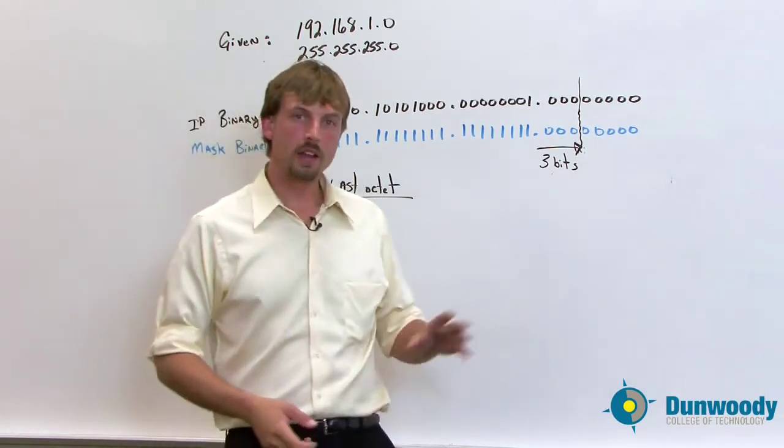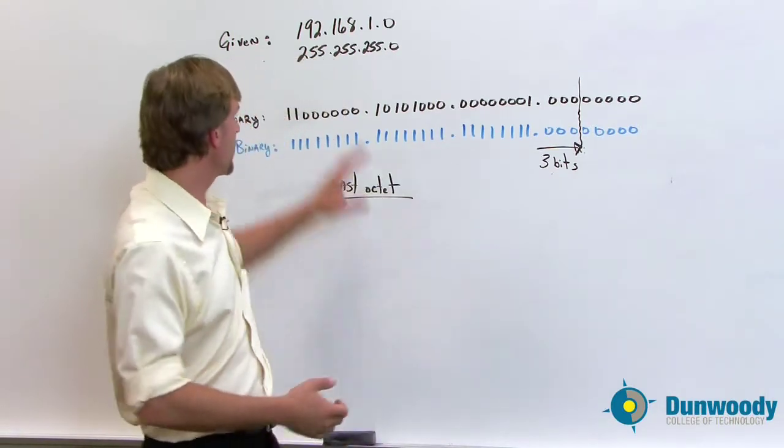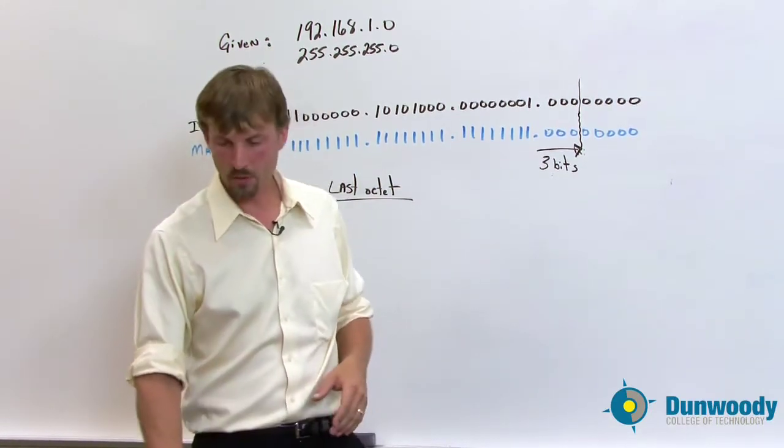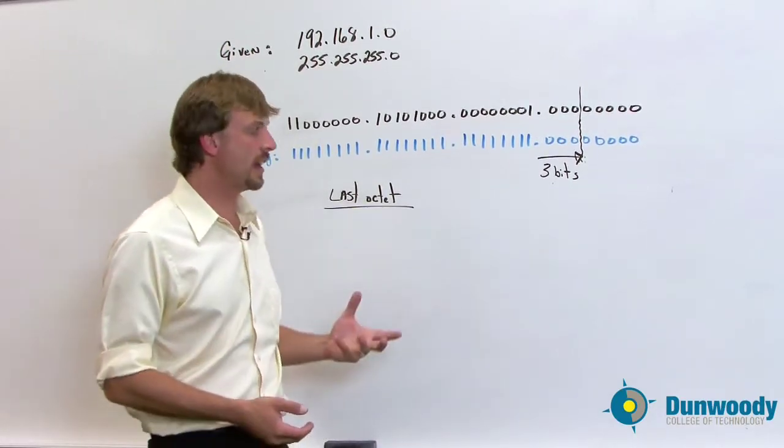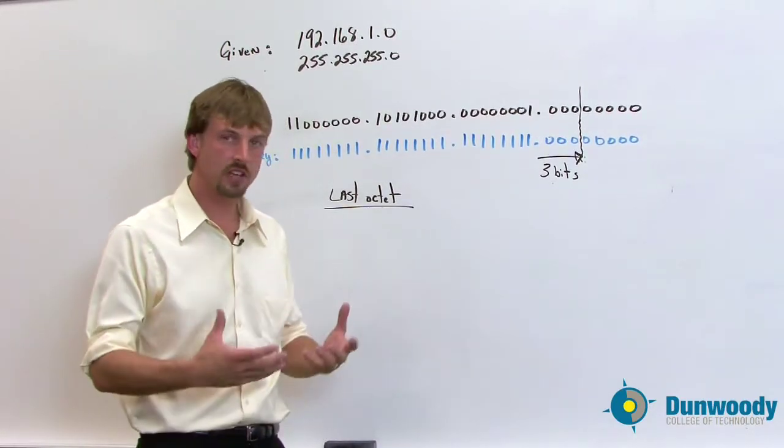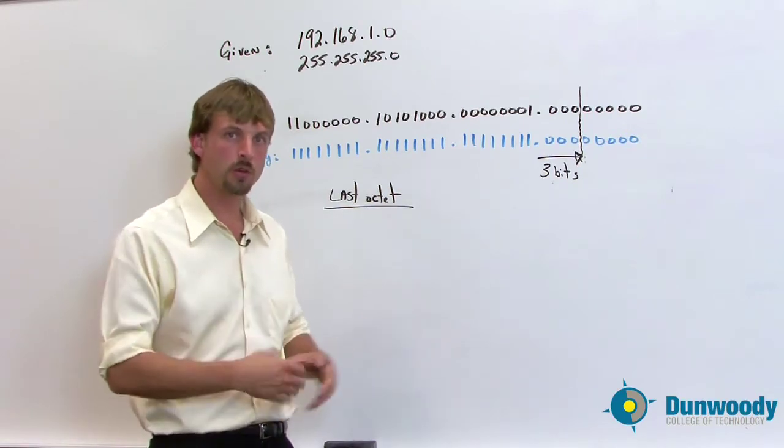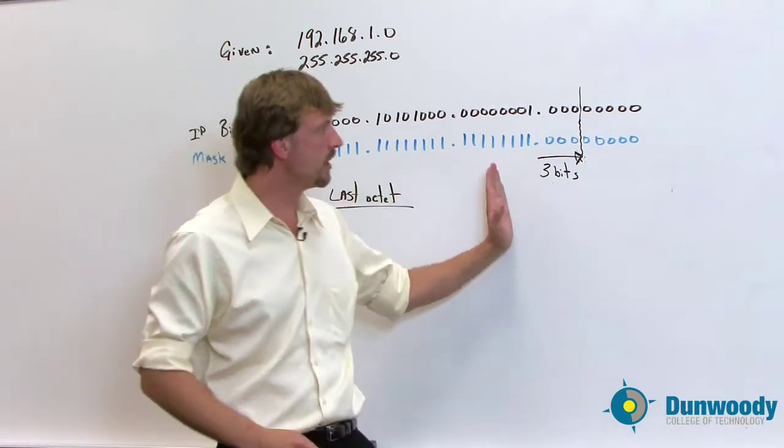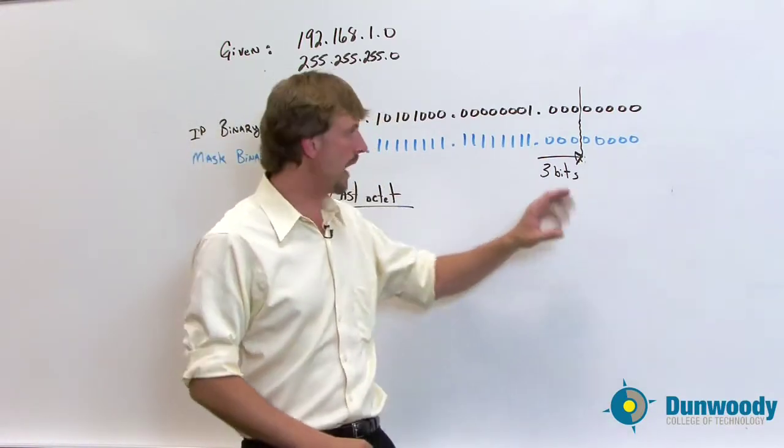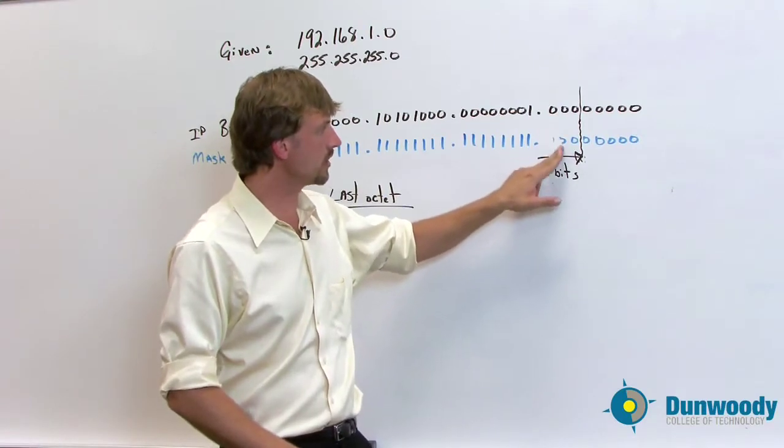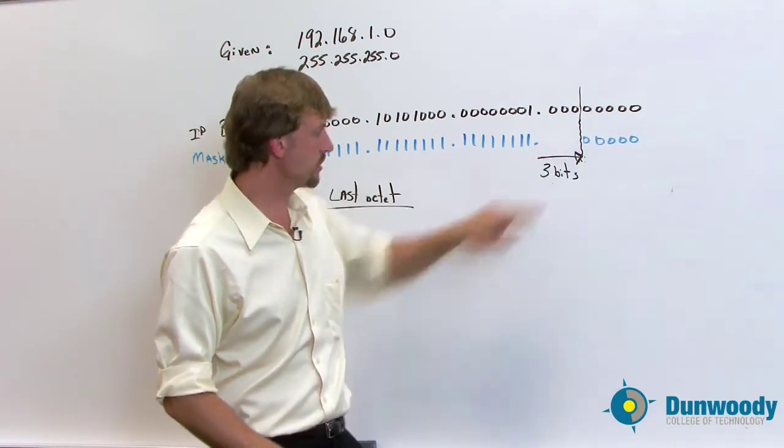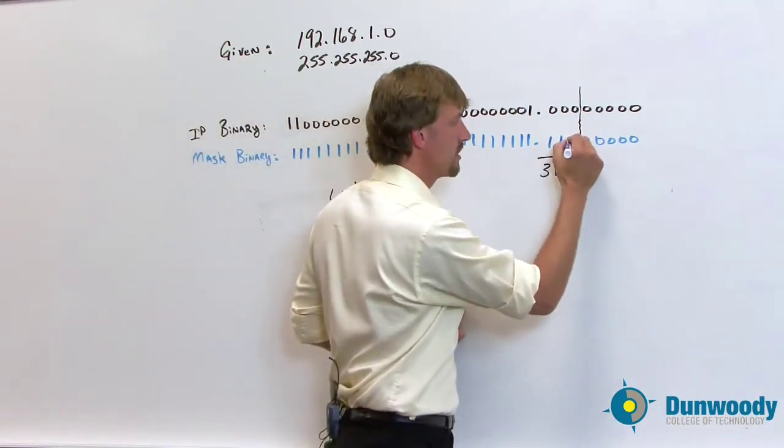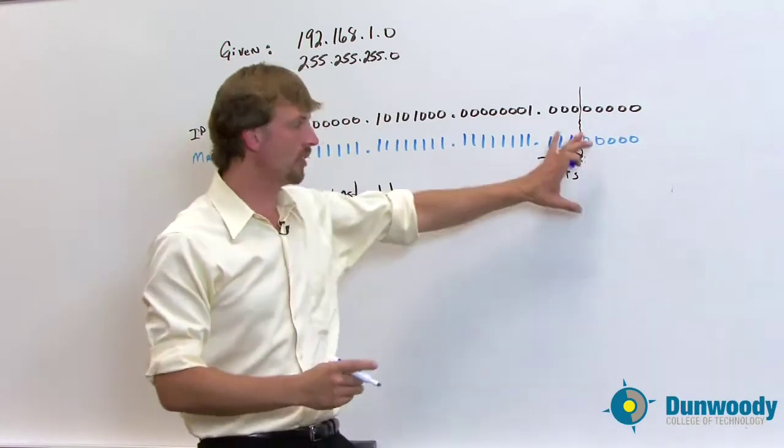So taking a look back at our IP address that we were given, we had the 192.168.1.0 space that we were given, and we divided that into six logical networks, and that told us through the formula that we needed to borrow three bits. So I've got that up here. We borrowed three bits going into this section here, which will actually change the way this looks. These zeros now will become ones, and that new mask value was 224 on that last octet.